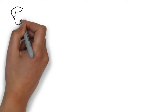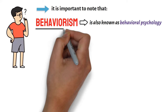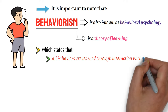What is behaviorism? First of all, it is important to note that behaviorism is also known as behavioral psychology. Broadly construed, behaviorism is a theory of learning which states that all behaviors are learned through interaction with the environment through a process called conditioning.